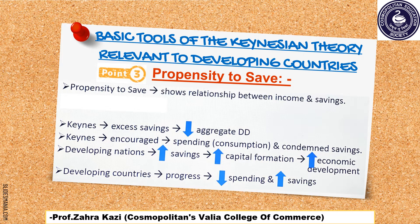The next point is Propensity to Save. Another important tool of Keynesian Economics is Propensity to Save, which shows a relationship between Income and Savings. When income is high, consumption is lower than the increase in income and thus savings increase. In advanced countries, according to Keynes, there is excess of savings, which leads to a fall in aggregate demand. Therefore, in such advanced countries, Keynes encouraged that they should spend more. On the other hand, in developing countries, increase in savings leads to an increase in capital formation, further leading to economic development. Thus, developing countries can break the circle of poverty by reducing their spending and increasing their savings.